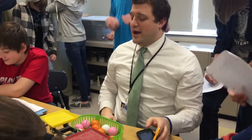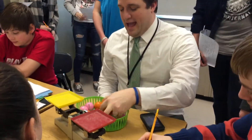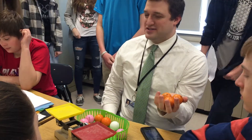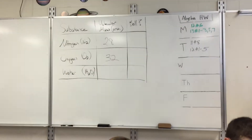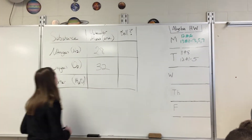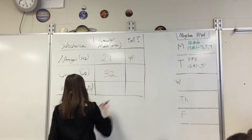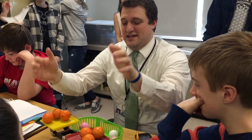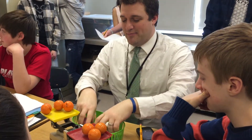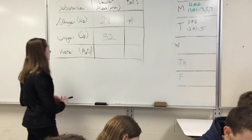We are going to represent nitrogen as orange golf balls. See where it says 'ball' there? I want you to write 'golf.' I'm going to put three nitrogen molecules in each sample of air. We are going to represent oxygen by pink golf balls, so oxygen gets 'golf ball.'